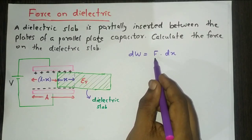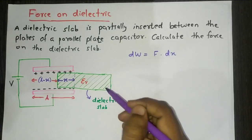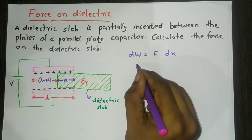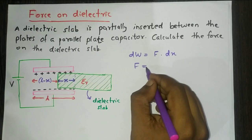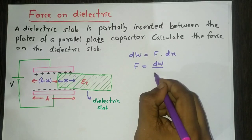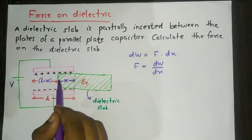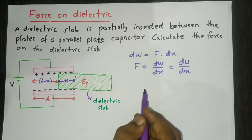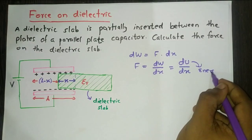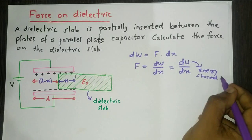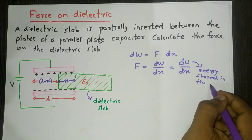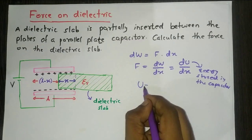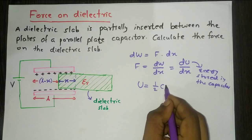The work done by this force can be stored as energy in the capacitor. Therefore I can write F = dU/dx, where U is the energy stored. The energy stored in the capacitor can be written as U = ½CV².